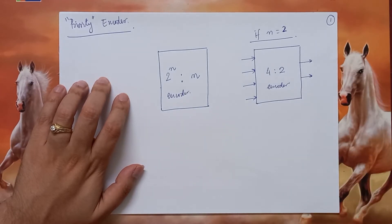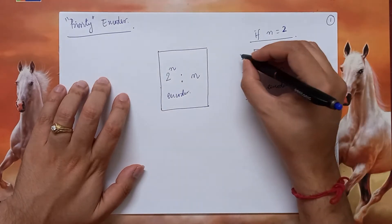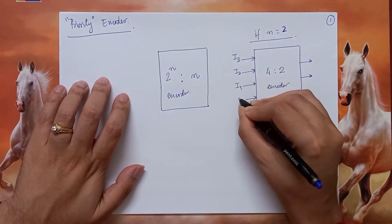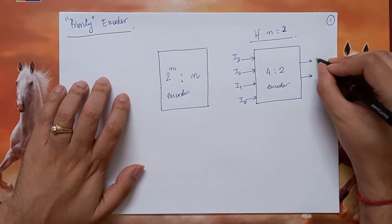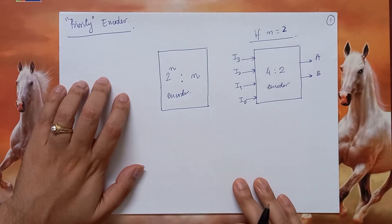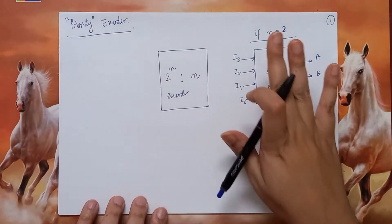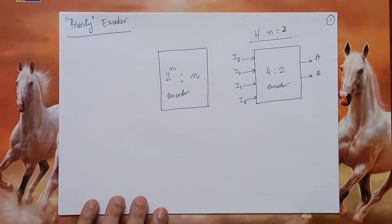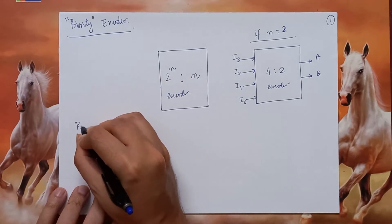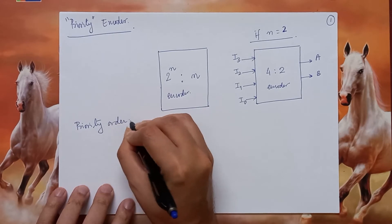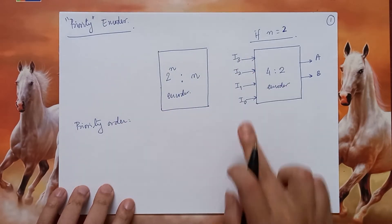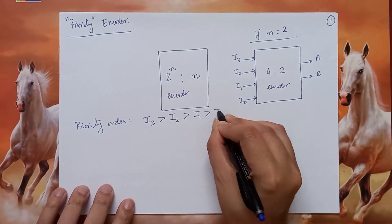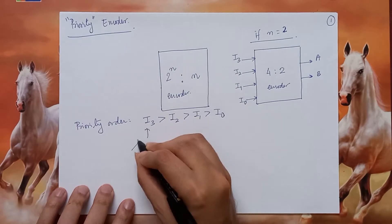Let us say the inputs are called I3, I2, I1, and I0, and the outputs are A and B. A priority encoder essentially works in such a way where these inputs have a priority order. Let us say I3 is the most important and I0 is the least important — I3 has highest priority, next I2, next I1, and then I0 has least priority.